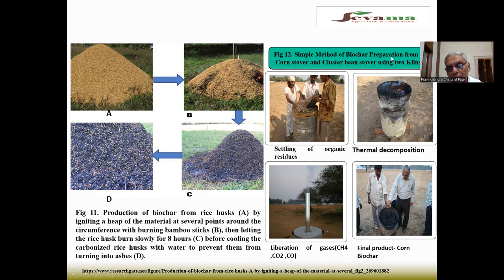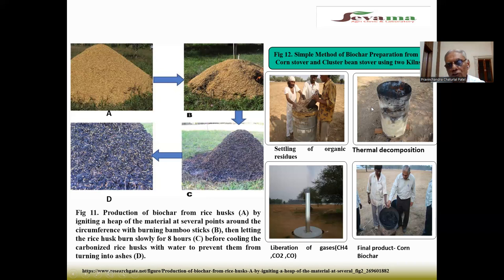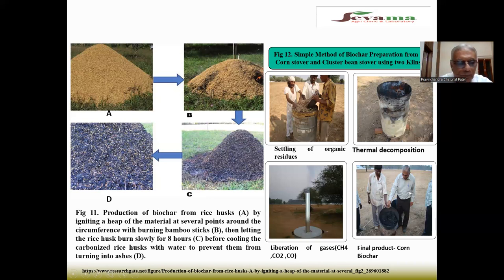Using thermal decomposition and liberation of gases — methane, carbon dioxide and carbon monoxide — the final product is biochar. Corn biochar was tested on corn crop, and it was observed that application of 5 or 10 tonnes of corn stover biochar along with the recommended dose of chemical fertilizer produced significantly higher dry matter and crude protein.